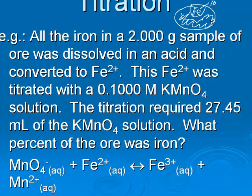So we dissolve it in an acid. We convert it all to Fe2+. The Fe2+ is titrated with permanganate ion. We know the molarity, 0.100 molar. The titration requires 27.45 milliliters of that permanganate solution, and we want to know what percent of the ore was iron.